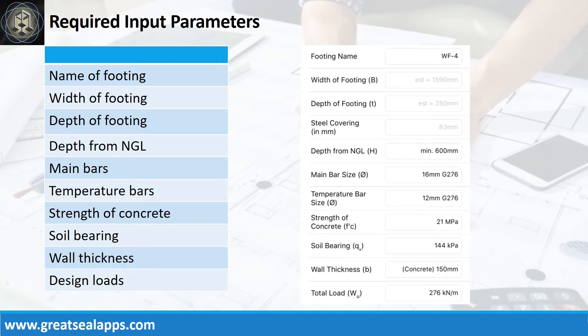Enumerate input parameters required. Name of footing, WF4. Depth from natural grade line, 600mm. Main bars, 16mm bar at grade 276. Temperature bars, 12mm bar at grade 276. Strength of concrete, 21MPa. Soil bearing capacity, 144kPa. Wall thickness, 150mm concrete wall. And factored uniform load, 276kN per meter.